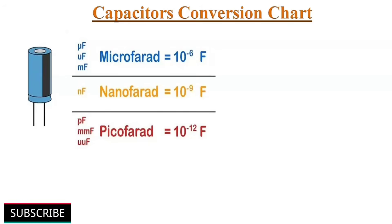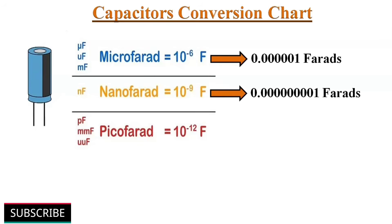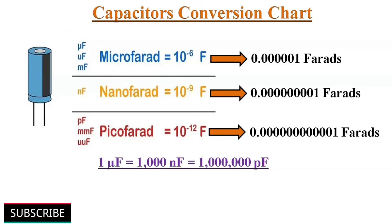Capacitance is measured in Farads. Since Farad is too large for practical purposes, microfarads, nanofarads, and picofarads are generally employed. One microfarad equals 1000 nanofarads, which equals 1 million picofarads.